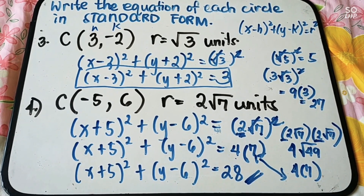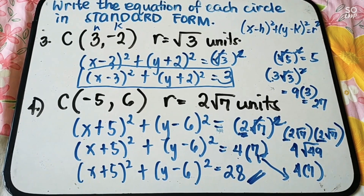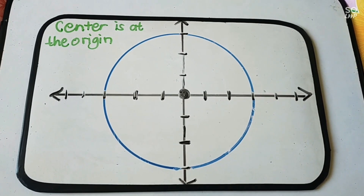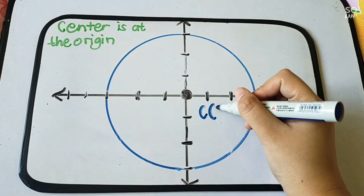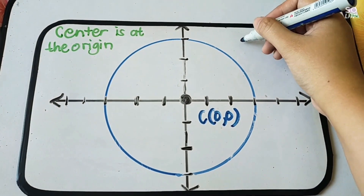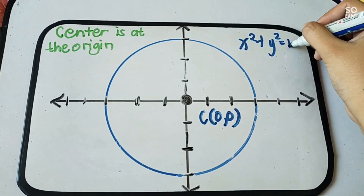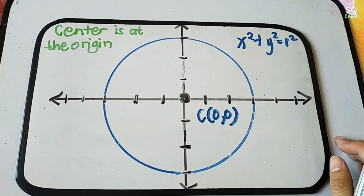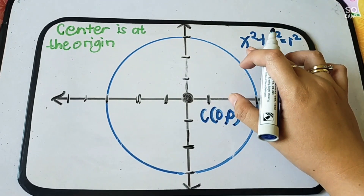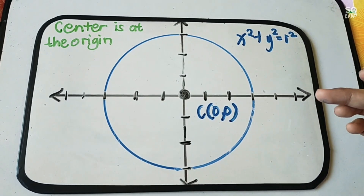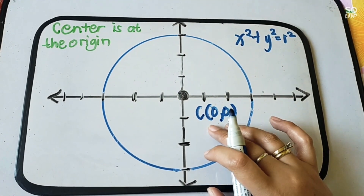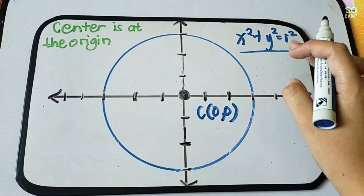That is how you find the standard form. Now, what if the center is at the origin? If the center is (0, 0), the standard form simplifies to: x squared plus y squared equals r squared. The h and k terms become zero and disappear, leaving only x squared plus y squared. So when the center is at the origin, you only substitute the radius.